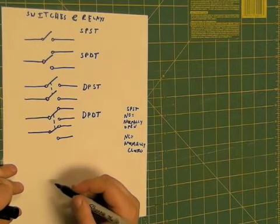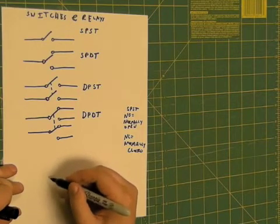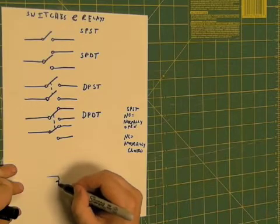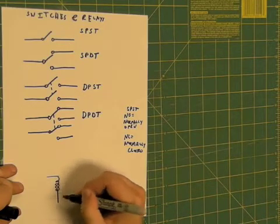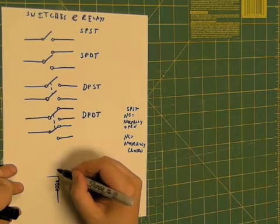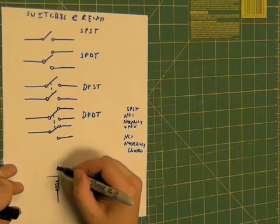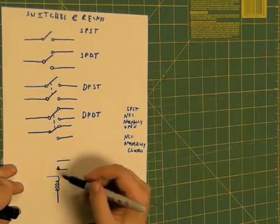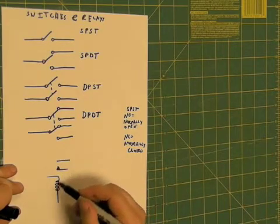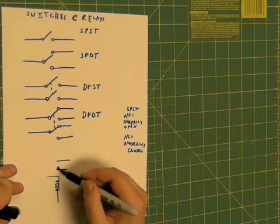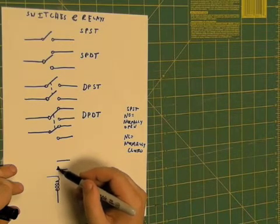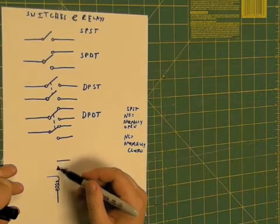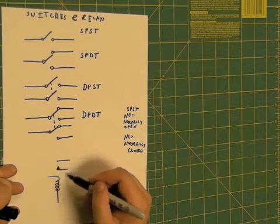Oftentimes they're depicted as a coil wire and then as a connector up above it. Basically, what happens is when you send current through this coil wire, it pushes the contact closed so that current goes through.